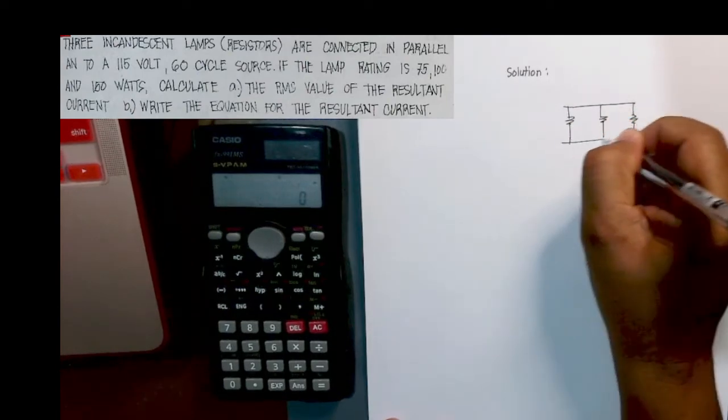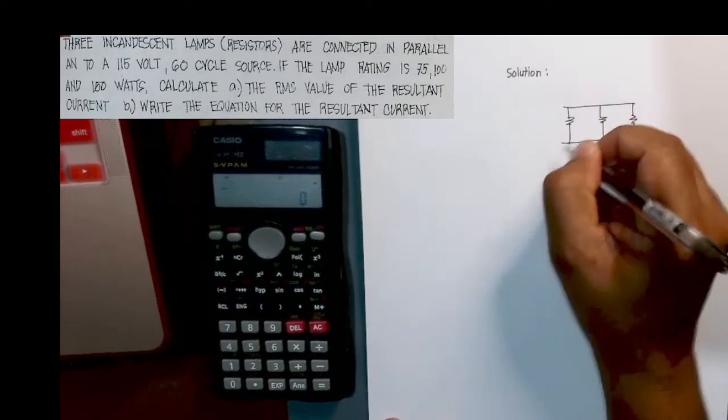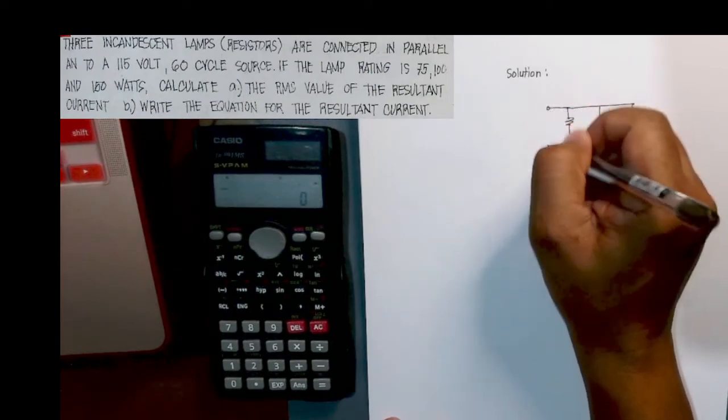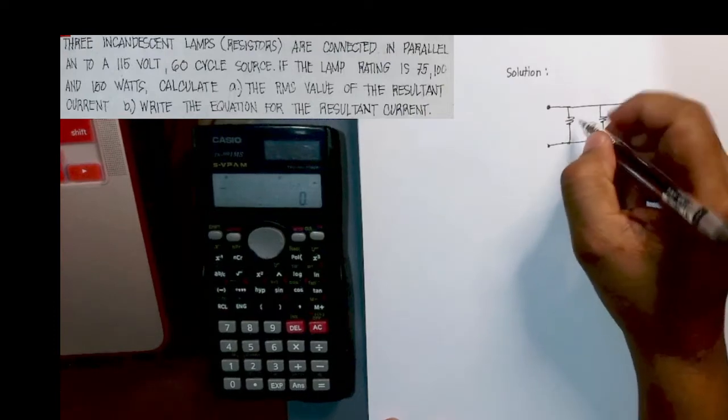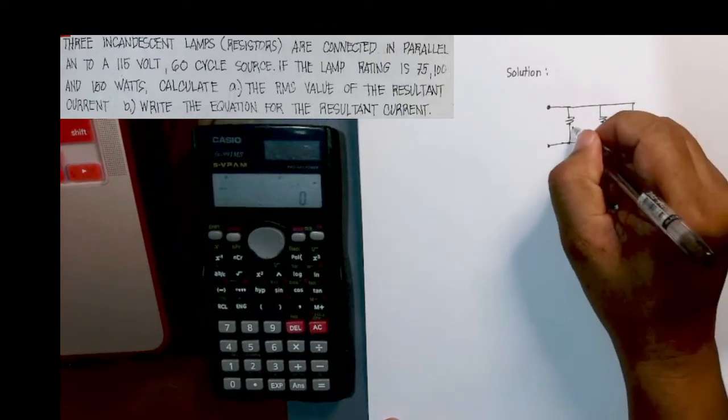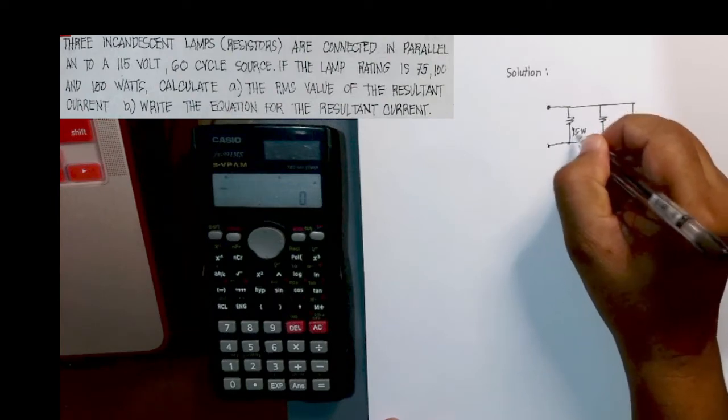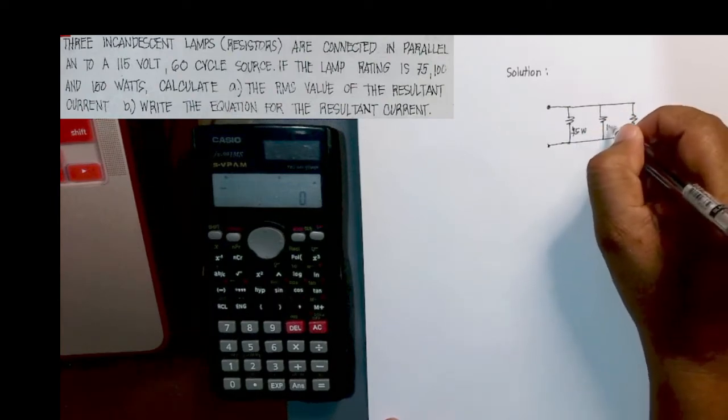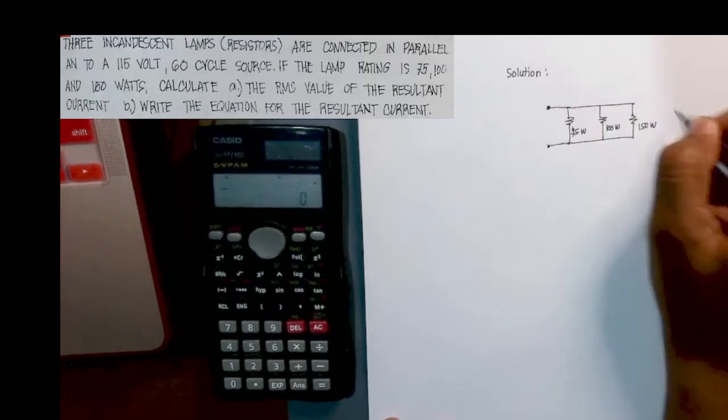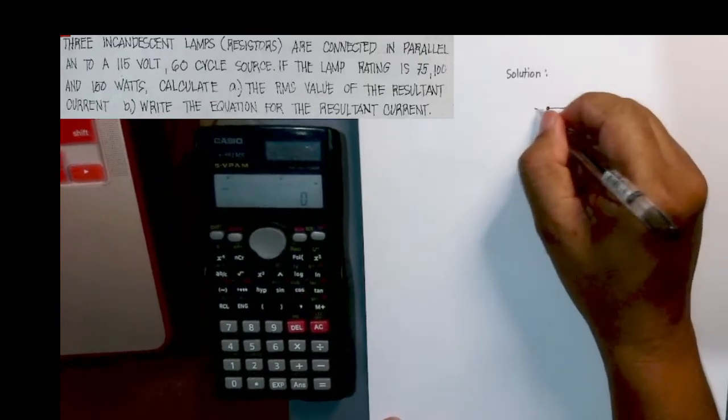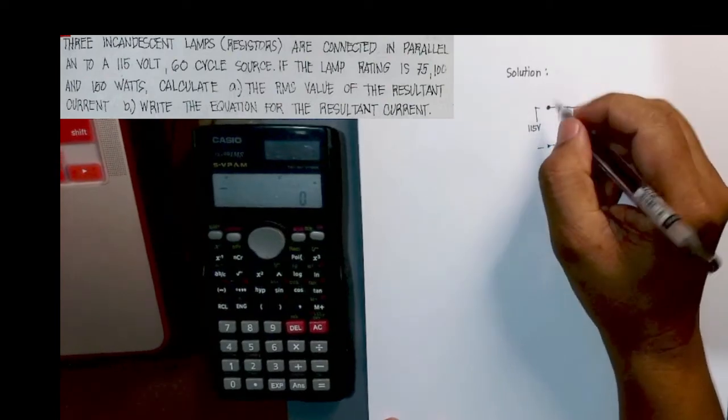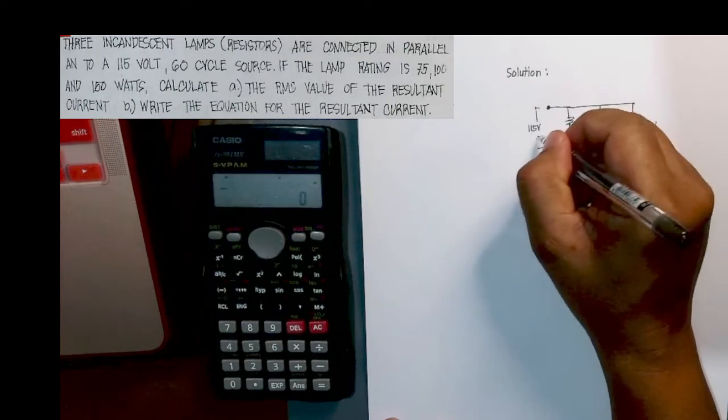These are the main source. For the first resistor, this is 75 watts, the other one is 100 watts, and the other one is 150 watts. Now if you are going to connect this to 115 volts as stated in the given problem.